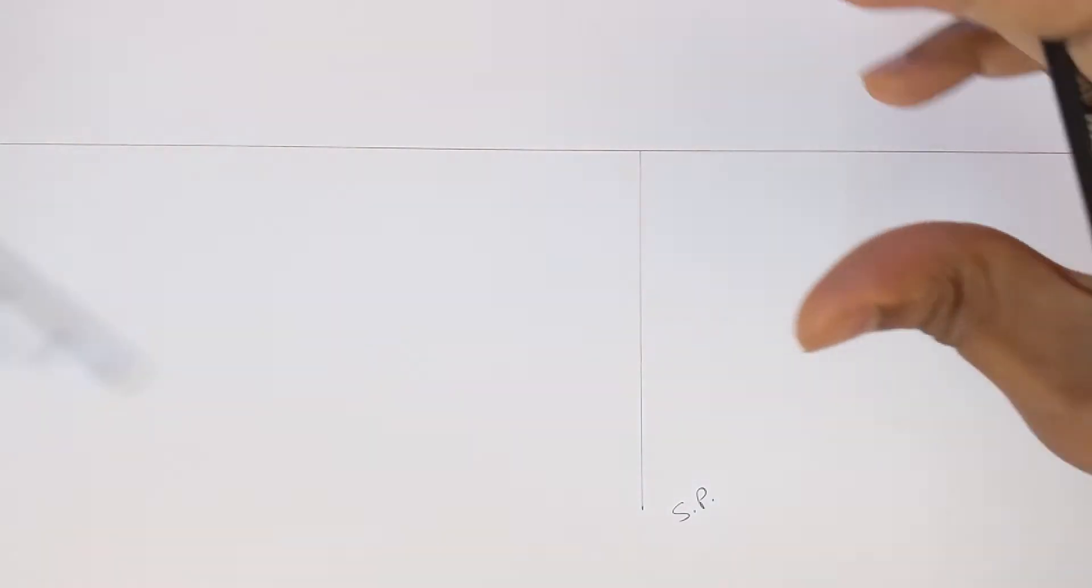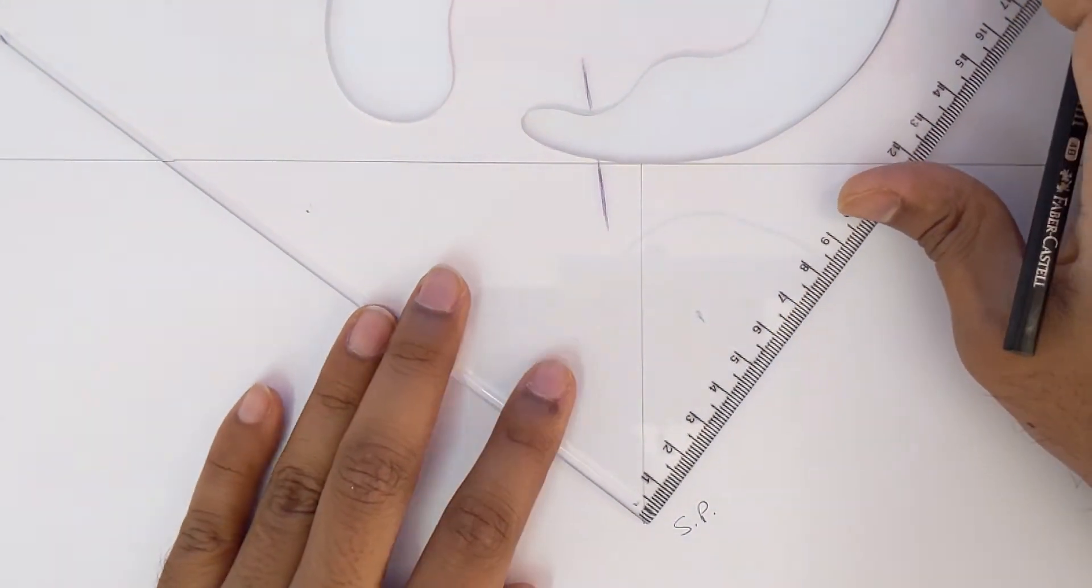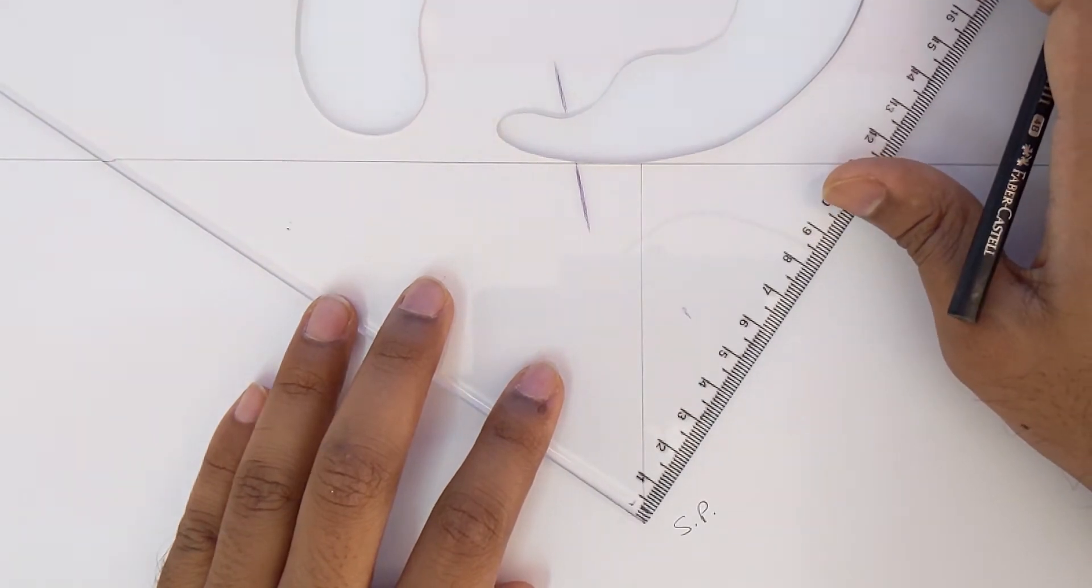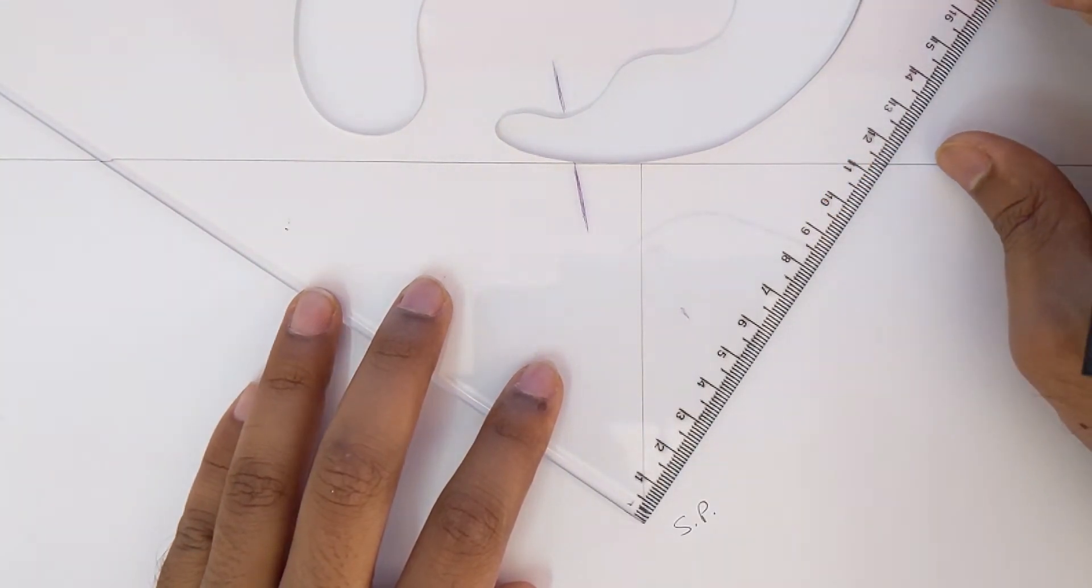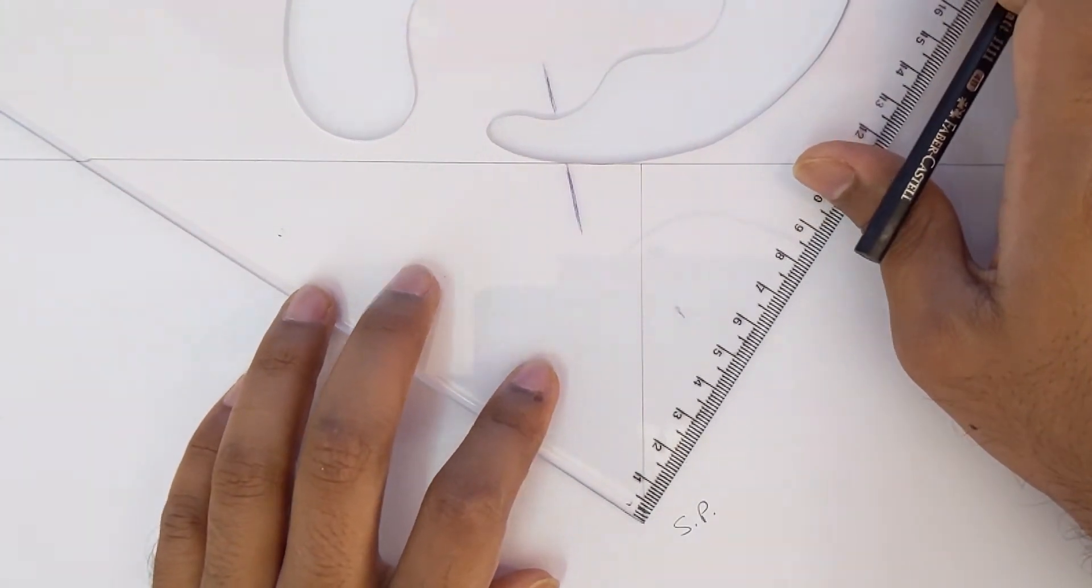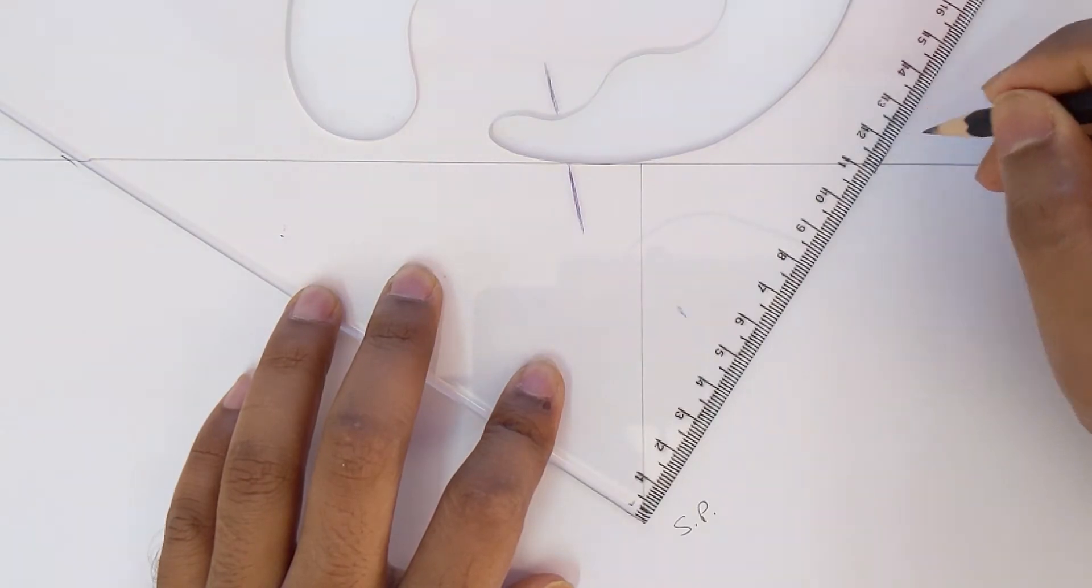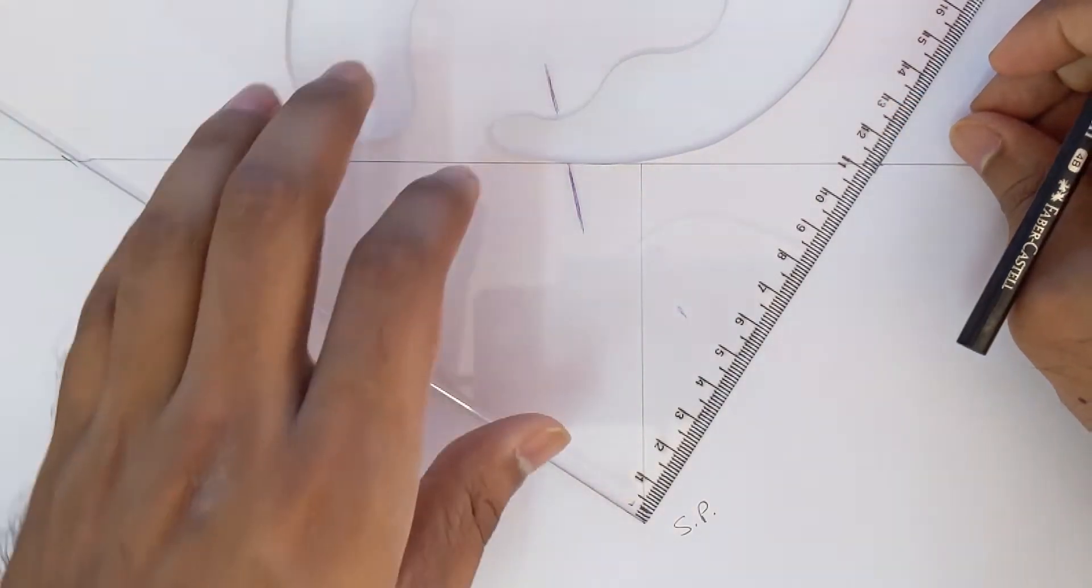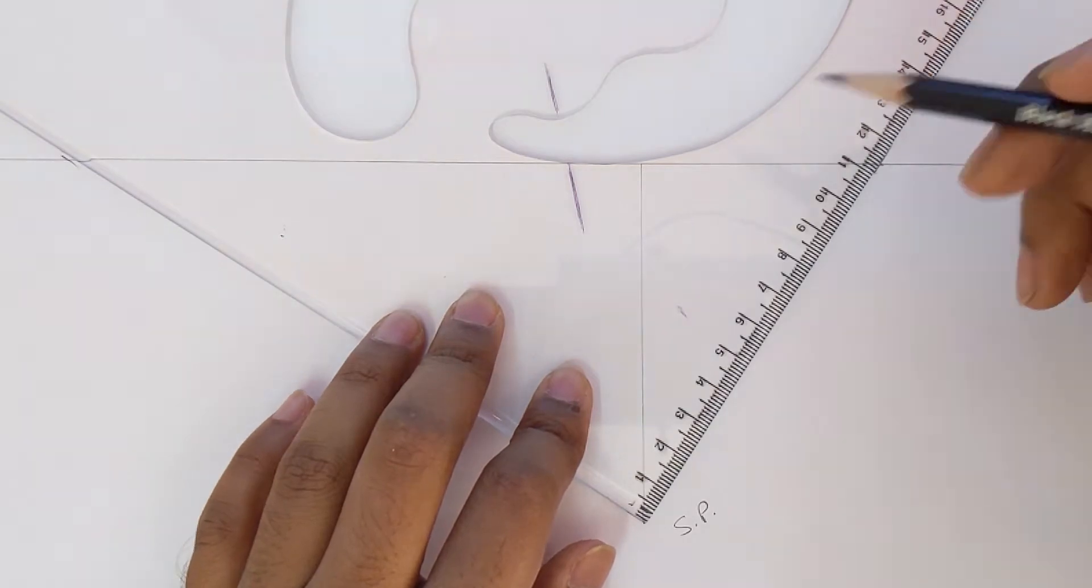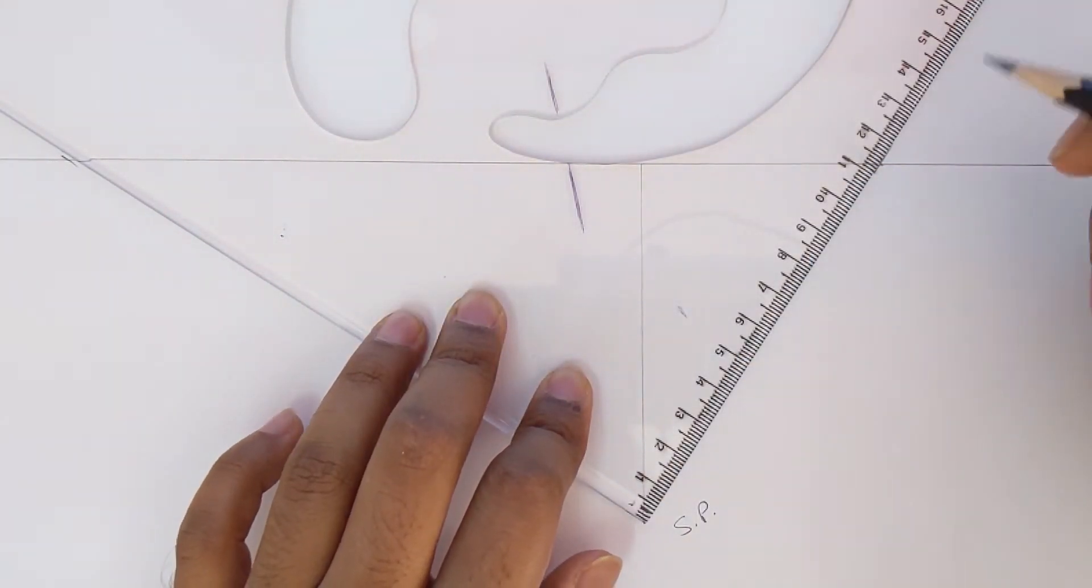Next step would be to grab a set square, place it on the station point, and draw or mark two points on the horizon line. This can be of any angle like this. Now these two points are our vanishing points. This is the left vanishing point and this would be our right vanishing point.